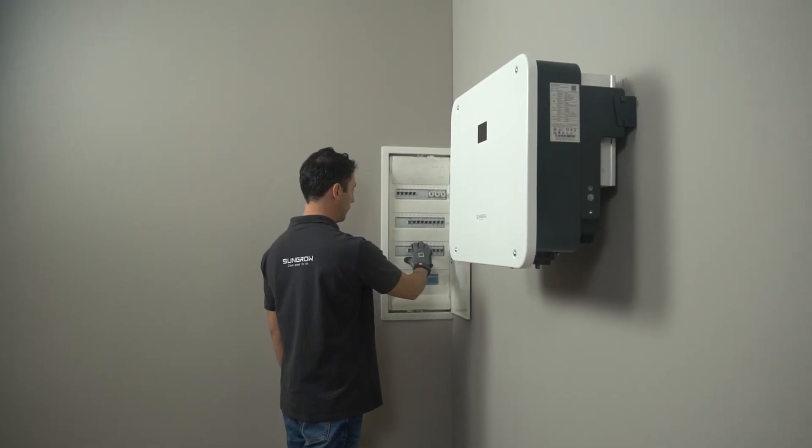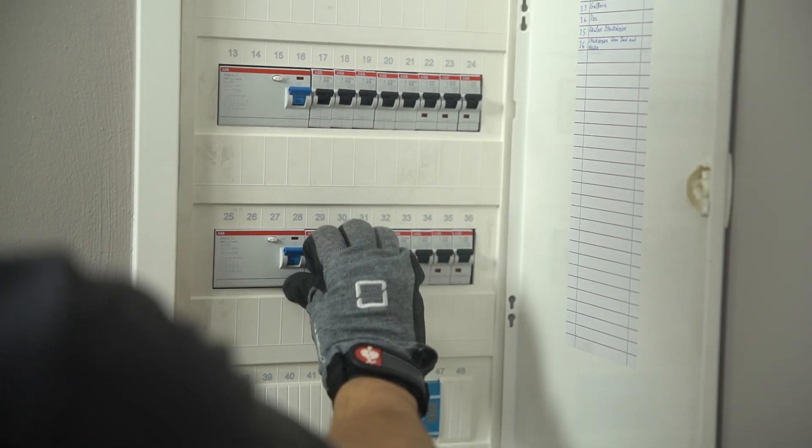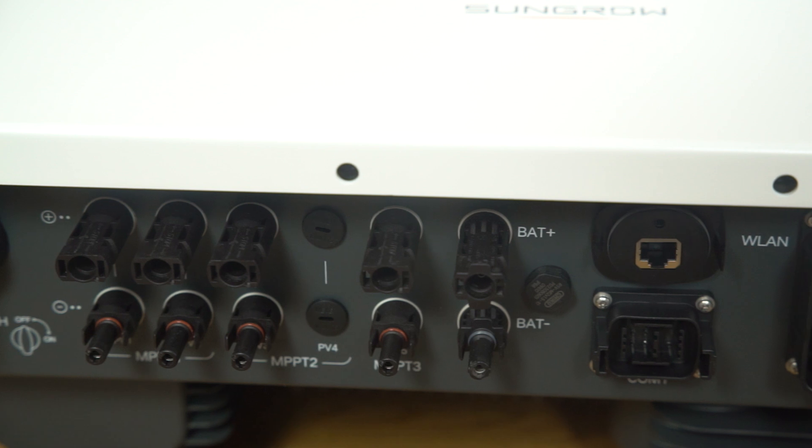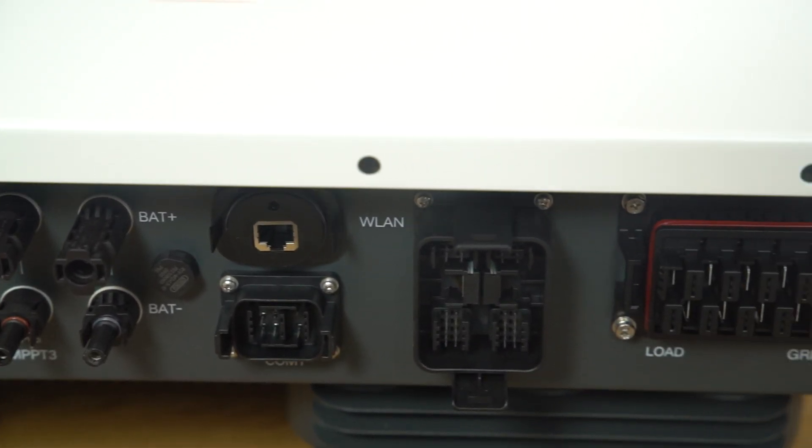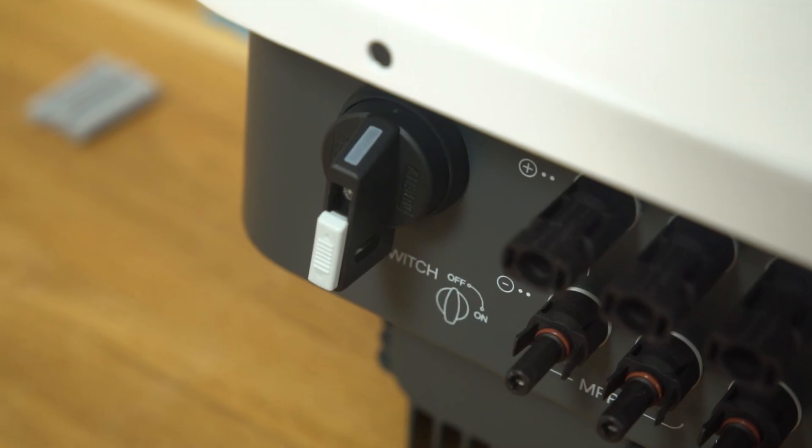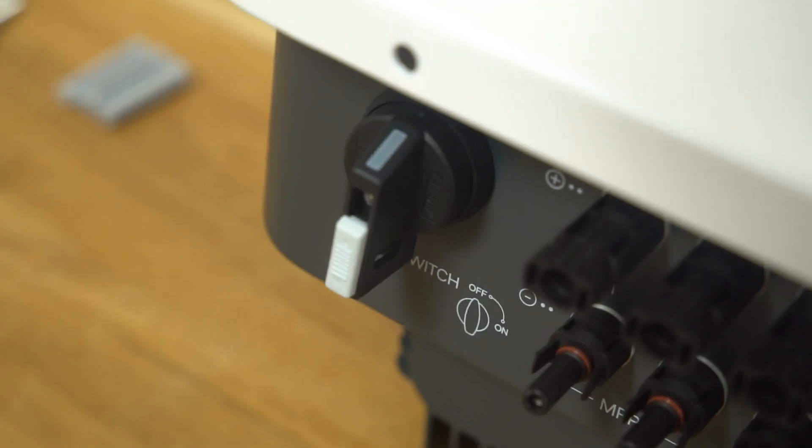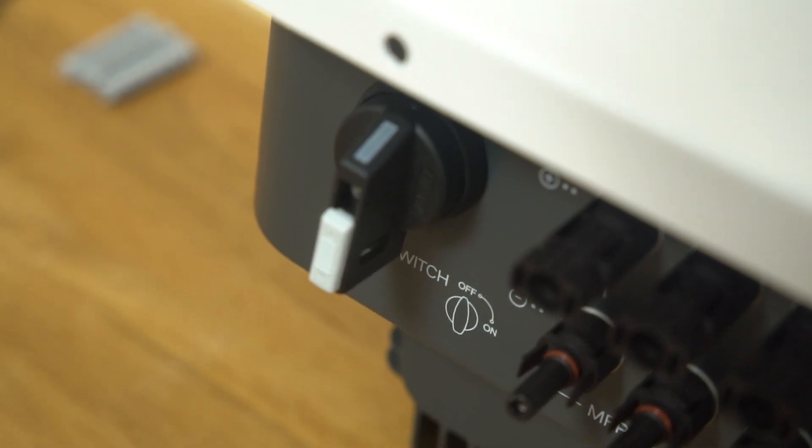Before the inverter can be connected, the AC home circuit breaker must be disconnected. Keep both the AC and DC switches disconnected to avoid live line operation. Set the DC switch on the left side of the inverter from ON to OFF.